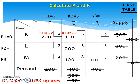Next, here we have R2 plus 5 equals 3, so we get R2 equals negative 2. And then here, we have R3 plus 5 equals 8, so we get R3 equals 3. Finally, here we have 3 plus K3 equals 3, so we get K3 equals 0.